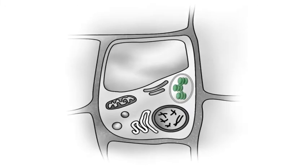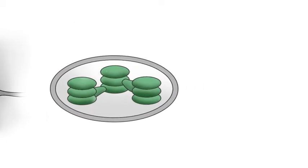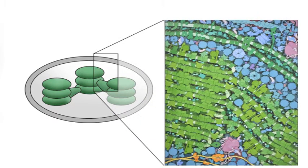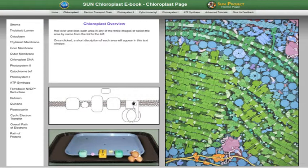A chloroplast is the organelle within green plants and algal cells where photosynthesis occurs. The chloroplast page allows you to closely examine protein complexes within the chloroplast.